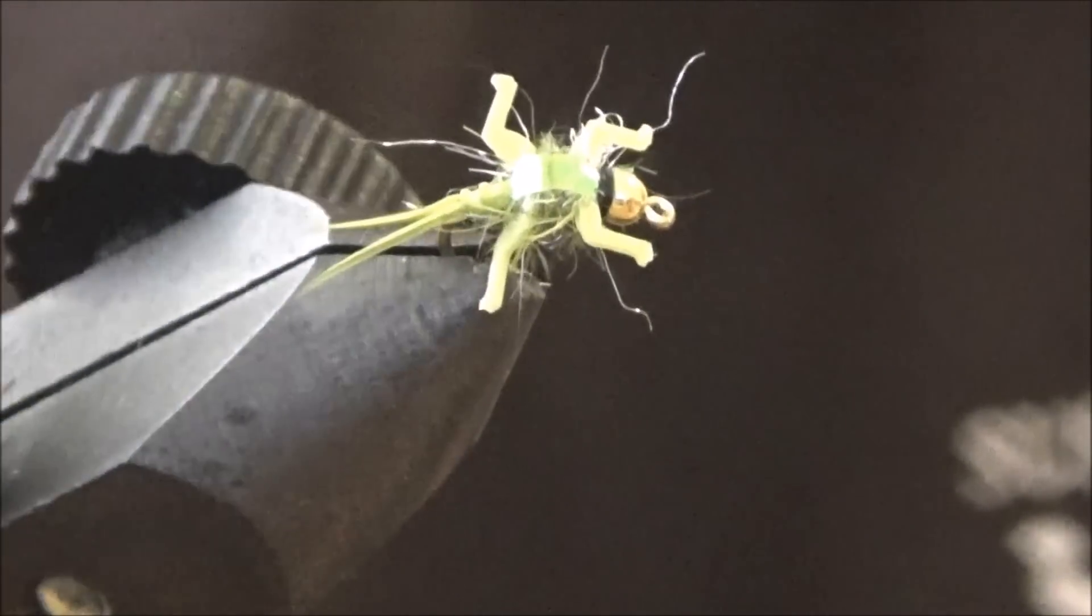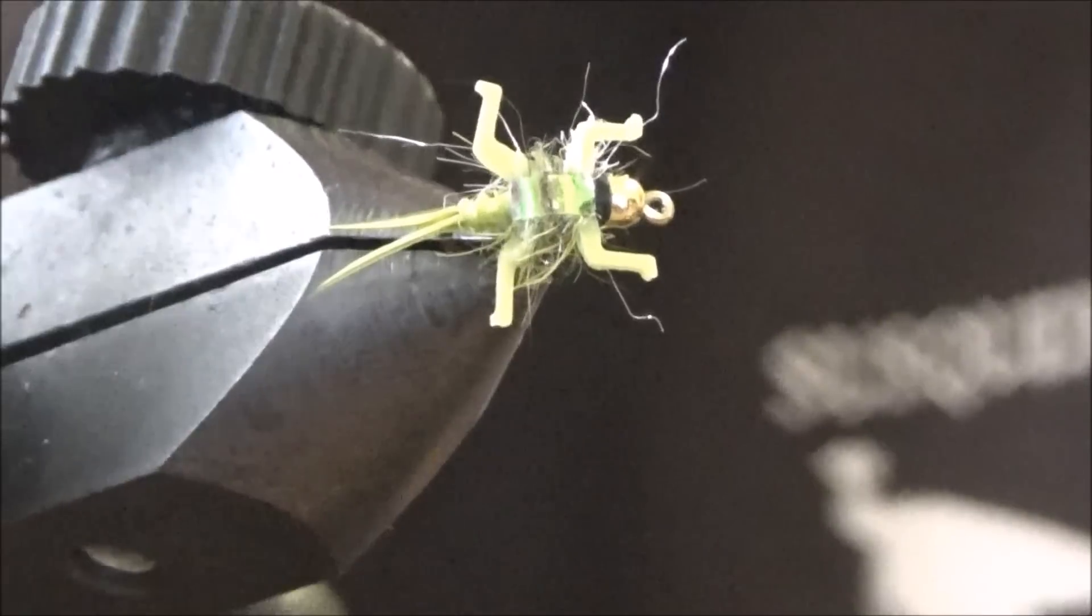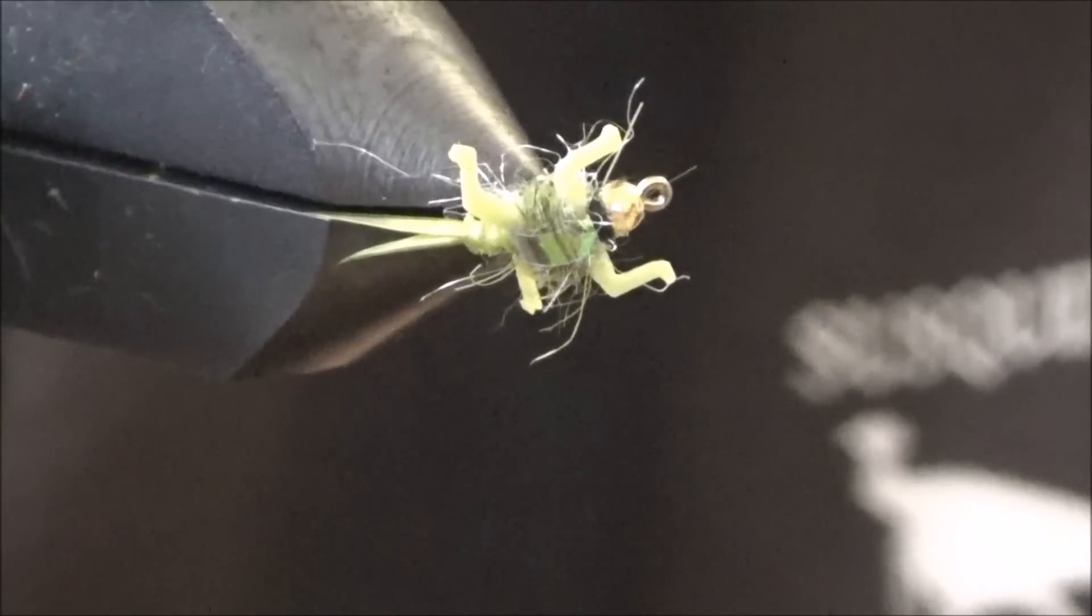Okay, today I'm going to be tying a Size 16 Lively Legs Olive Baetis Blue Olive Nymph. So stick around, I'll show you how to tie it.